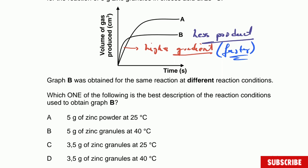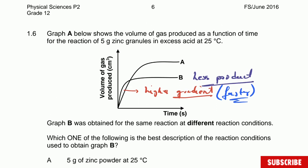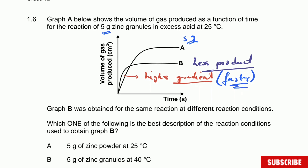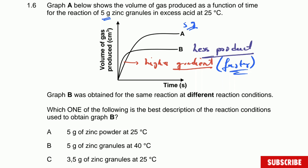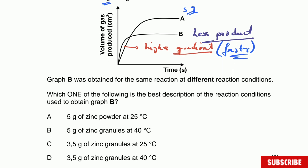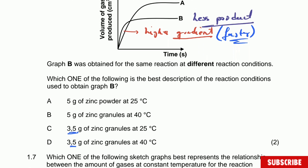Looking at the options: five grams of zinc powder at 25°C cannot be correct because B produces less product, and more zinc would give more product. The 40°C option could be valid since higher temperature increases rate. The only options that could explain a faster rate with less product are C or D. The correct answer is D — a higher temperature with a smaller amount of zinc explains the higher gradient but less total product.